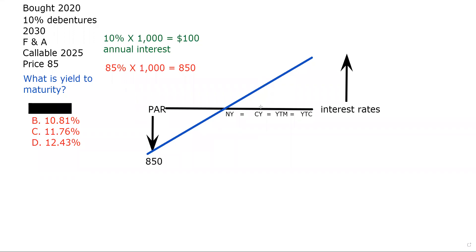I know the current yield is going to be somewhere in here, and the yield to maturity — which is what they're asking on the question — is above that. There's the yield to call above that. What I should be able to do on the test is calculate current yield — that is something I should definitely be able to do.